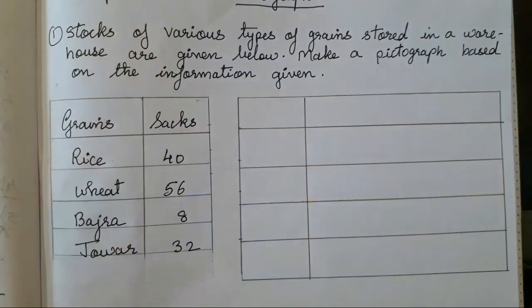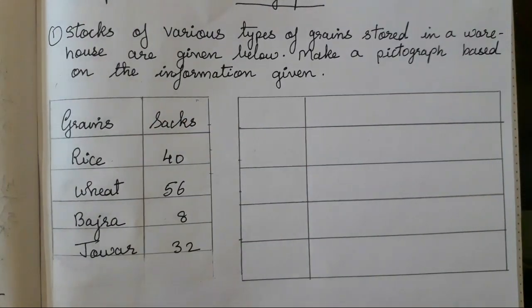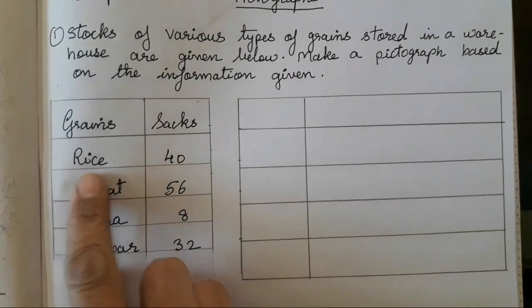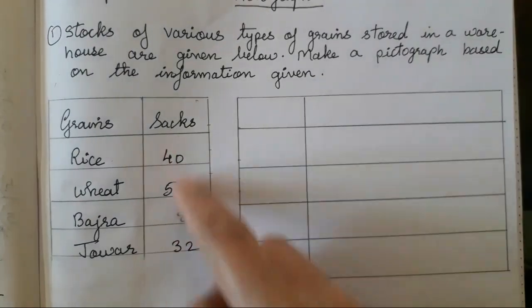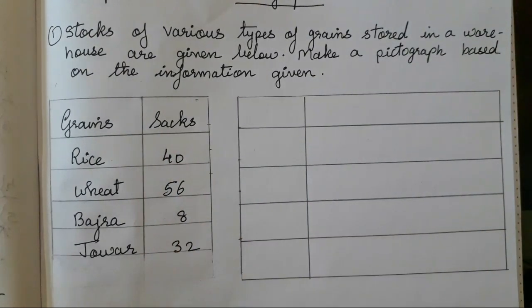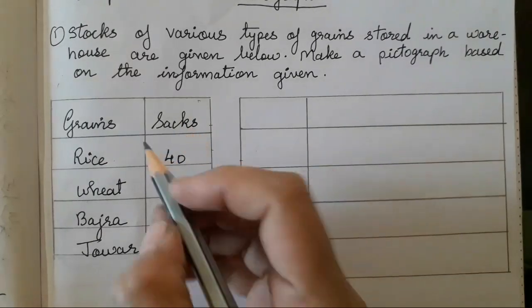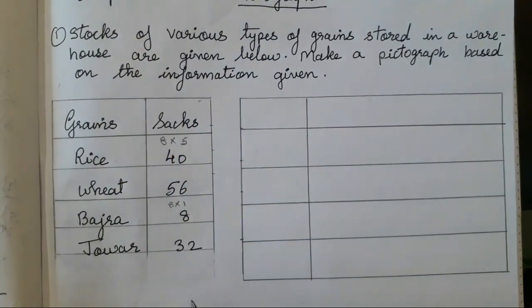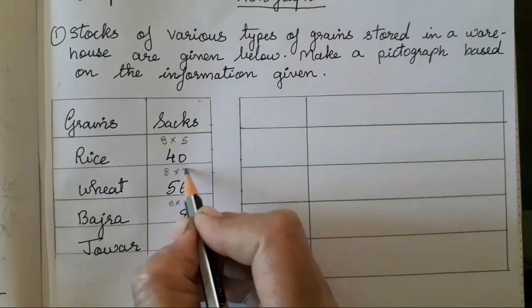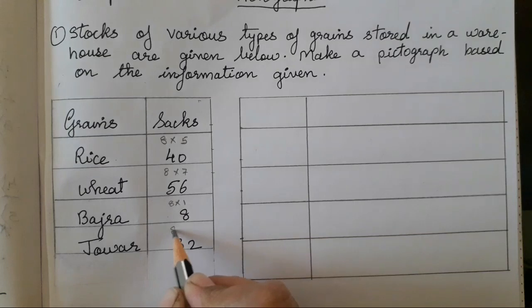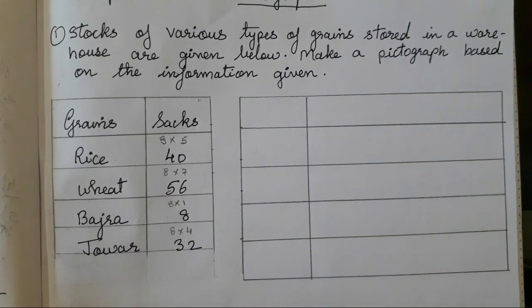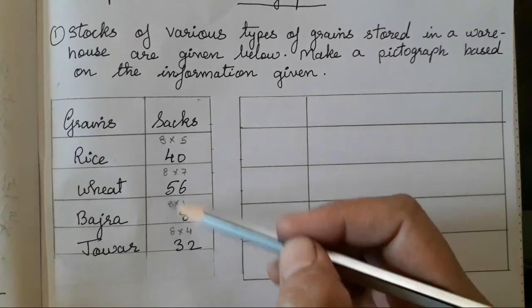So grains and sacks. For sacks, y'all have to draw any picture — y'all can draw a sack picture or any other picture if y'all want. If we have such numbers, we have to see which is the smallest one. So obviously 8 is the smallest one. Now how are you going to make the pictures and on what basis? 8 means 8 ones are 8. 8 fives are 40, 8 sevens are 56, and 8 fours are 32. So you will see all these numbers come in the table of 8.